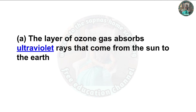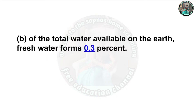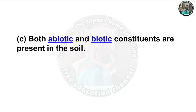Fill in the blanks: (a) The layer of ozone gas absorbs ultraviolet rays that come from the sun to the earth. (b) Of the total water available on the earth, fresh water forms 0.3 percent. (c) Both abiotic and biotic constituents are present in the soil.